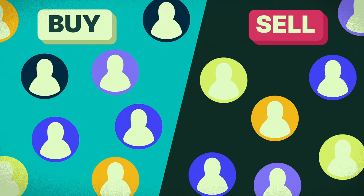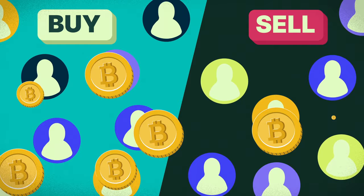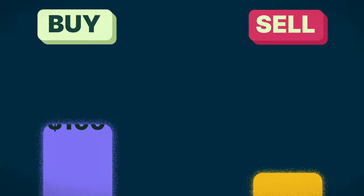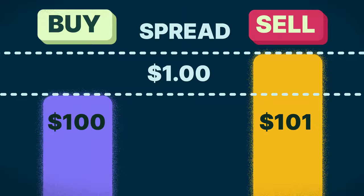Since there are many buyers and sellers actively trading the asset, the spread — or the difference between the highest price a buyer is willing to pay and the lowest price a seller is willing to accept — tends to be narrow. This helps buyers and sellers transact at a price that is close to the current market price.